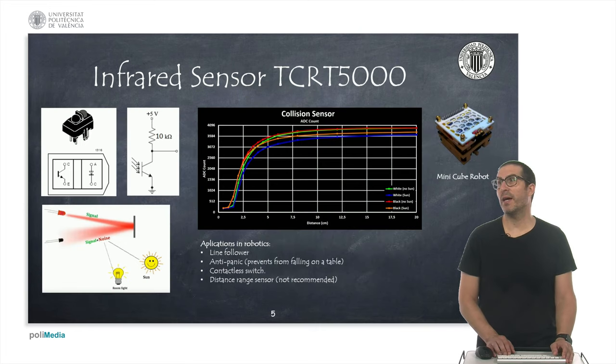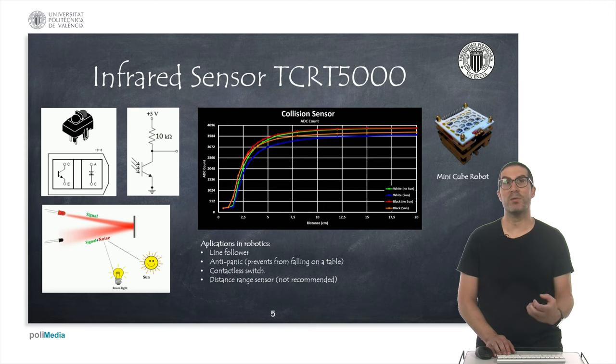And then we have this sensor, the TCRT5000, it's a well-known sensor as well, and it can be used in order to detect the amount of light with a phototransistor in this case that has been generated with an infrared LED.